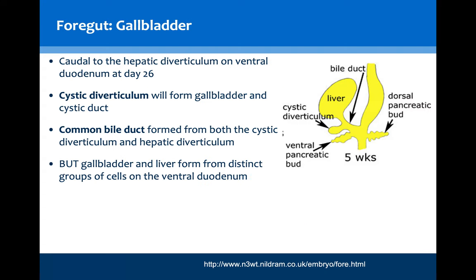Caudal to the hepatic diverticulum, around day 26 and remaining on the ventral surface of the GI tube, the cystic diverticulum will begin to grow. This will form the gallbladder and its cystic duct, and the common bile duct will form as a result of both the cystic and hepatic diverticula. It's important to remember that the liver and the gallbladder actually form from embryologically distinct cells on the ventral duodenum, as proved through radiolabelling experiments.